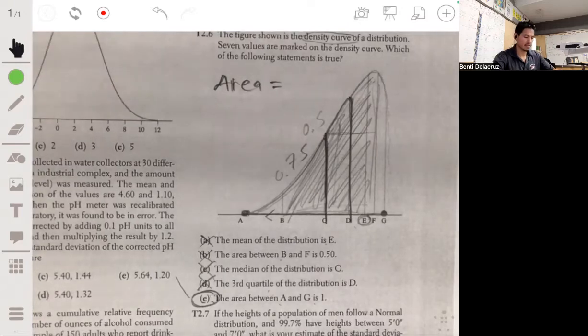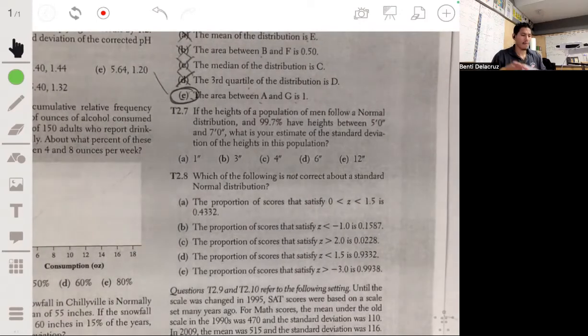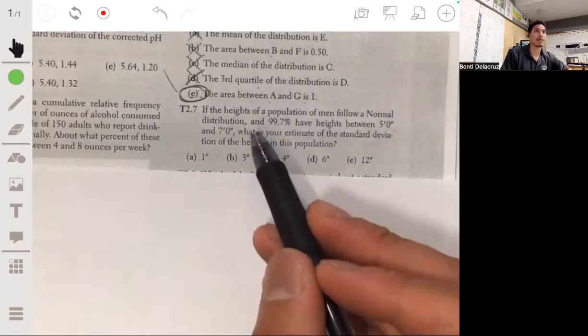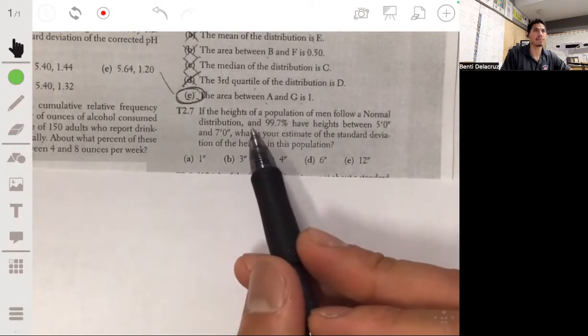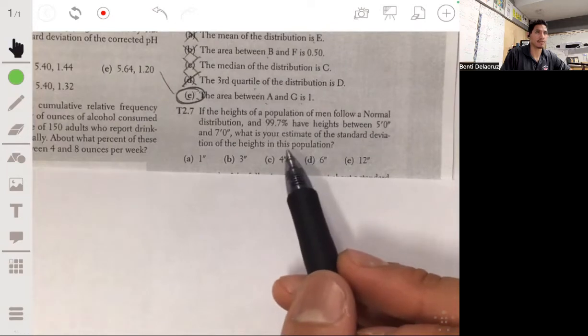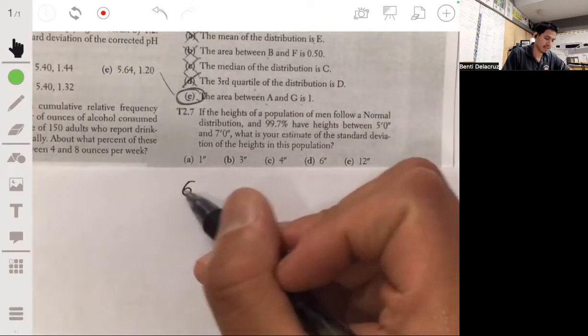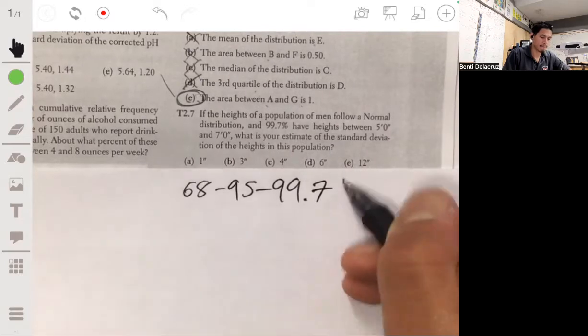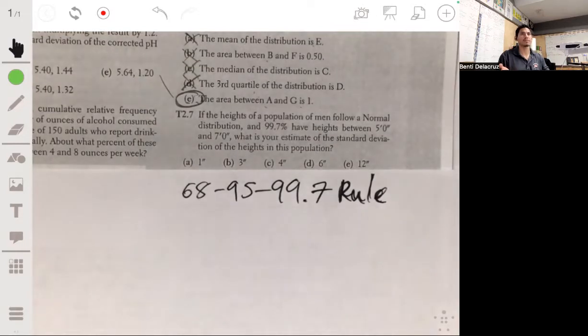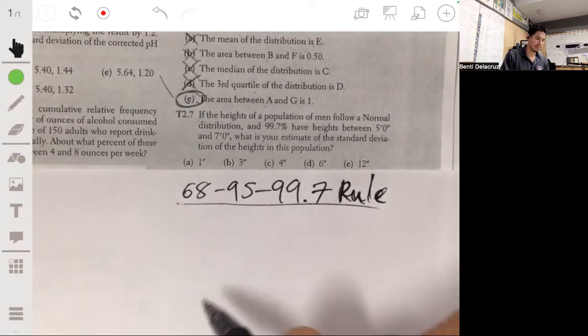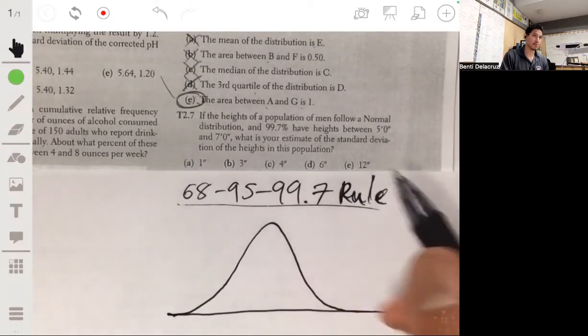Right now, let's move on to 2.7. Right here. We're told that the heights of a population follow a normal distribution and 99.7% of them have heights between 5 feet and 7 feet. What's the estimate of the standard deviation in this population? This one is actually pretty easy if you remember the 68-95-99.7 rule. Make sure you memorize that. That's a big deal. It's going to haunt you all through your statistics course if you don't memorize it.